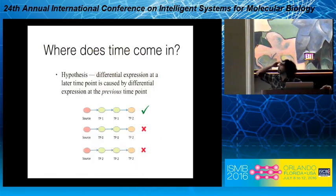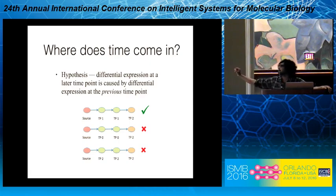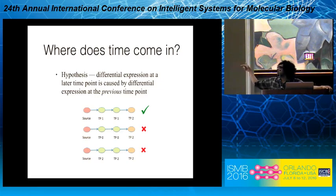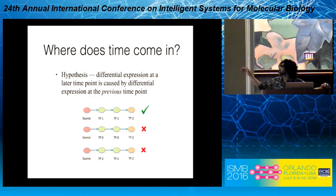So how do we incorporate time? Our hypothesis is that differential expression at a later time point is caused by differential expression of a gene at the previous time point. Visually, suppose we have a pathway from a source to a target at time point two. If there is a protein at time point one in that pathway, we accept it. However, if there is no protein at time point one — say it's all at time point zero or all at time point two — we are not satisfying our hypothesis, so we do not accept those pathways.